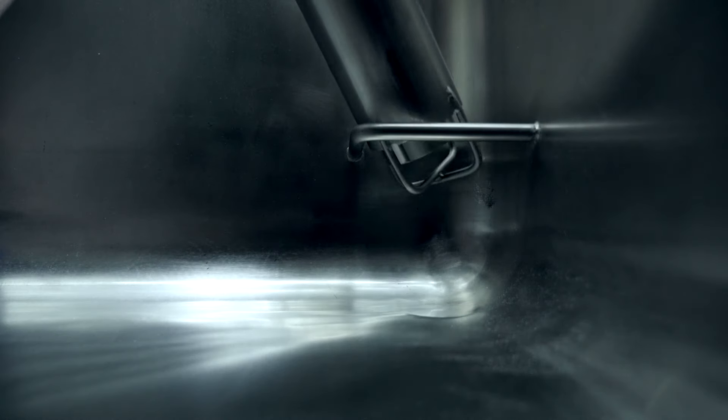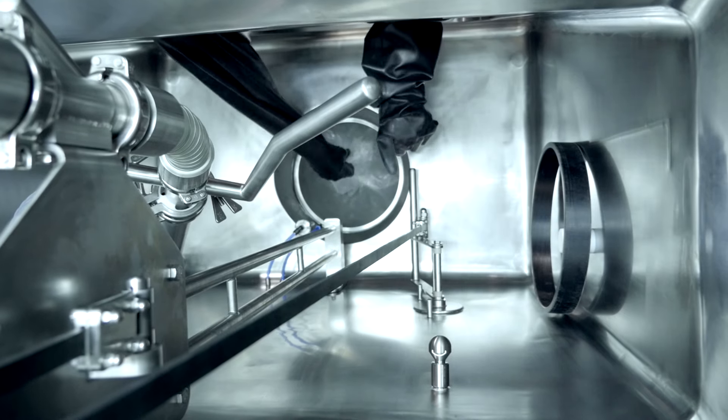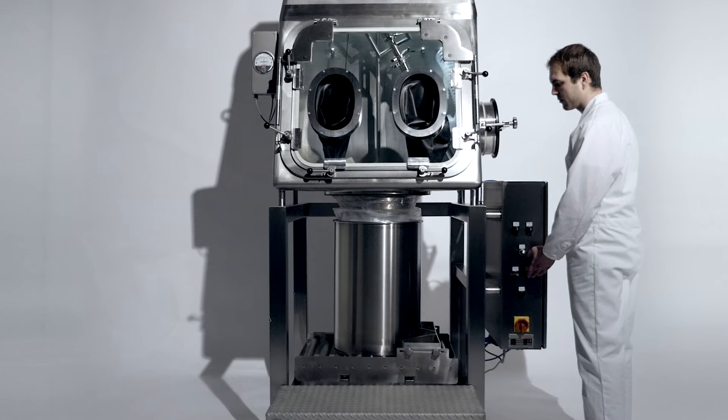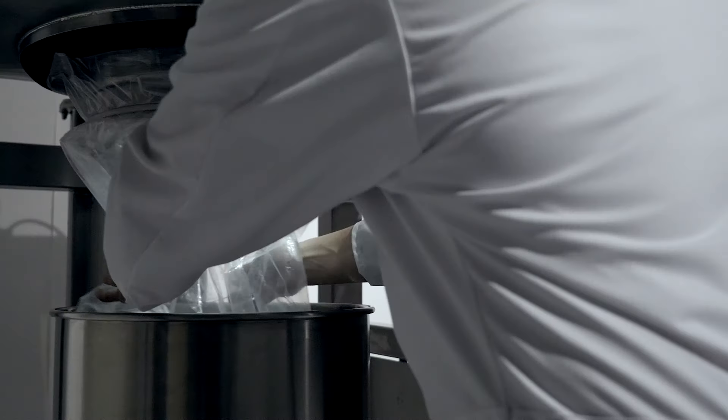After completion of the discharging process, the inflatable seal and the counter ring can be dismantled. Afterwards, the empty inner liner can be closed and put back into the drum. In order to ensure the containment, the disconnection of the outer liner is performed with the Hecht High Containment Closing System.